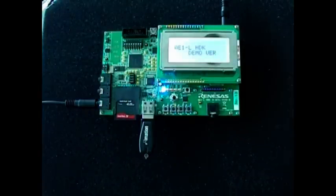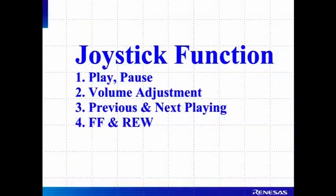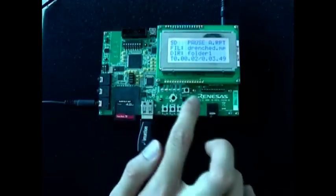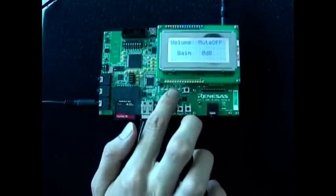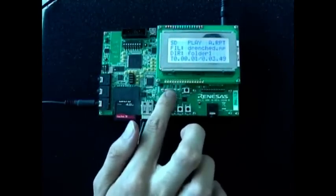Power on, and the music automatically plays. The joystick is used for basic music controlling. Push down for music play and pause. Push up and down while holding for volume adjustment. Left and right direction push is used for previous and next track. Holding left or right performs faster rewind or fast forward.